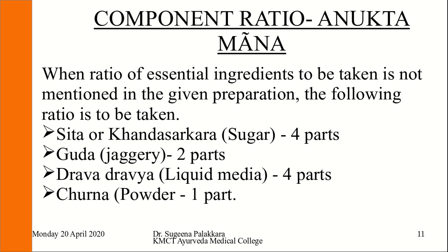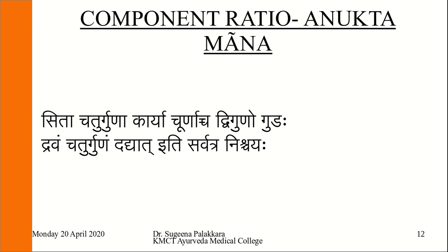The Anukta Mana of Avaleha refers to the ratio of ingredients when not specified in the formula. For Sitha (sugar candy) we take four parts, for Guda (jaggery) two parts, Drava Dravya (liquid) four parts, and Churna (powder) one part. This is described in the shloka from Sharangadhara Samhita Madhyamakhanda: 'Sitha chaturgunakarya churnaccha digunogudaha, dravam chaturgunam dadhyadhya idhi sarvatranishcheha.'